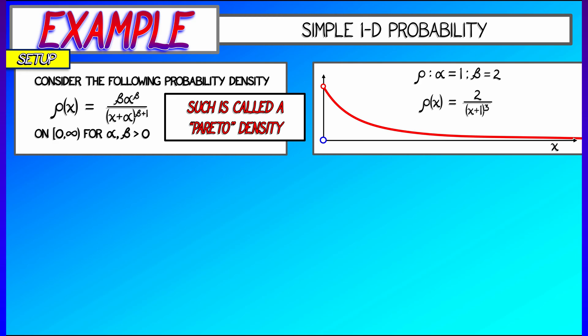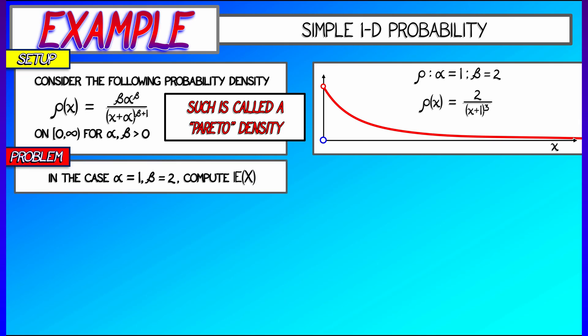Let's look at a specific example where, say, alpha is 1 and beta is 2, so that rho of x is 2 divided by quantity x plus 1 cubed. This starts off with high density near 0, and then it very quickly plummets to very small densities. That is a specific example from this family of Pareto distributions. Now, the question we're going to consider is, in this particular case, in this case where alpha is 1, beta is 2, what is the expectation, what's the mean of this random variable?